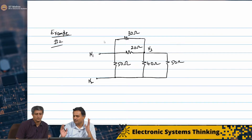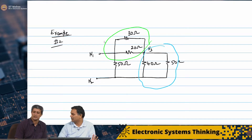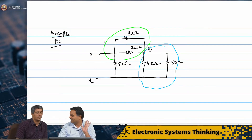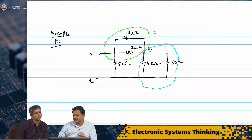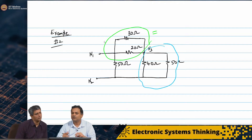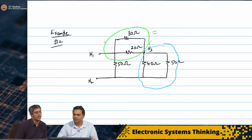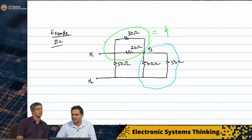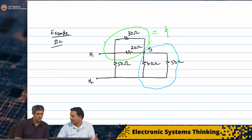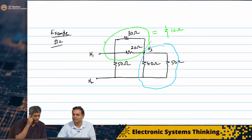I already see at least two things that can be simplified — this portion and this portion as well. They are both simple parallel networks. One is two parallel resistors between N1 and N3, the other is two parallel resistors between N3 and N2. We have 20 and 30 in parallel, so that portion is a single resistance of 30 × 20 / (30 + 20) = 600 / 50 = 12 ohms. And 12 is less than both 30 and 20.